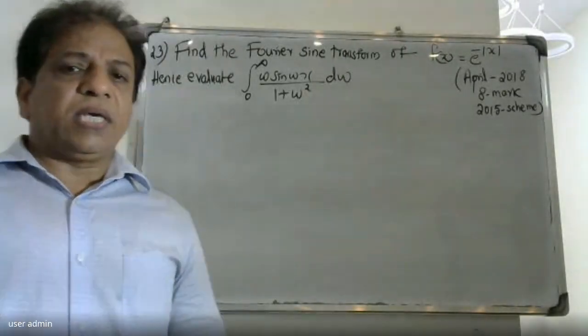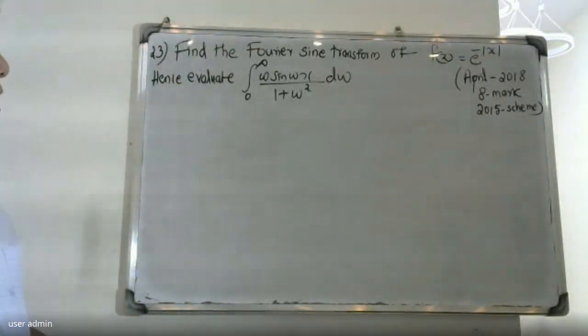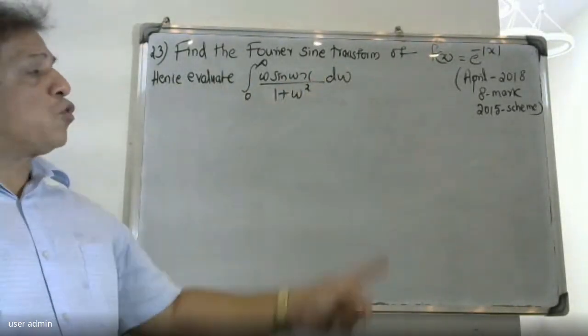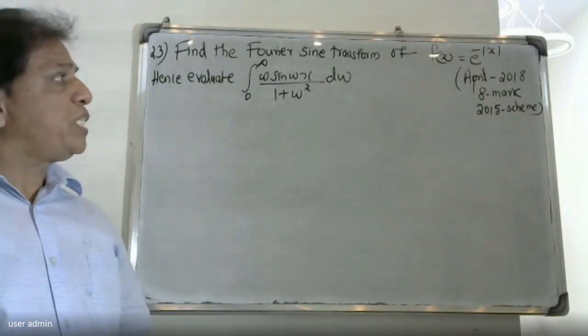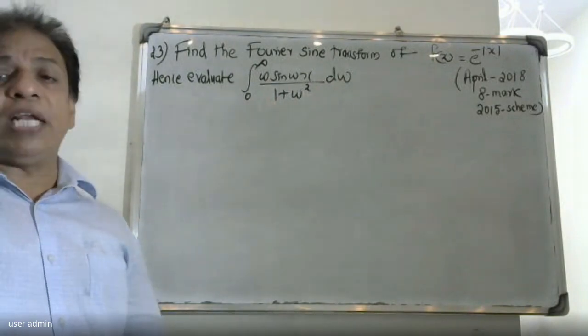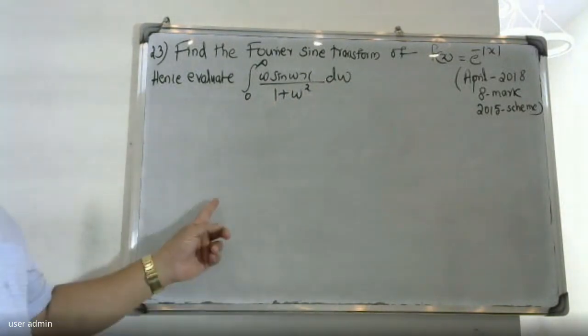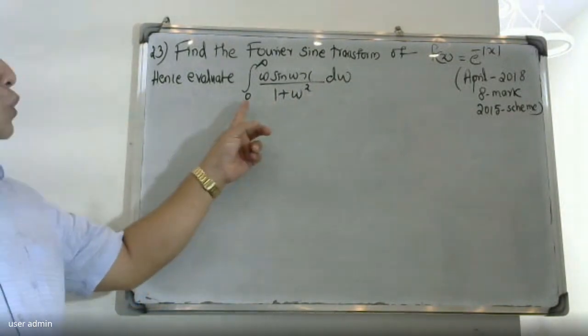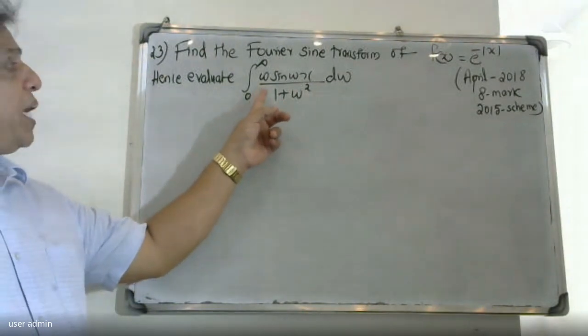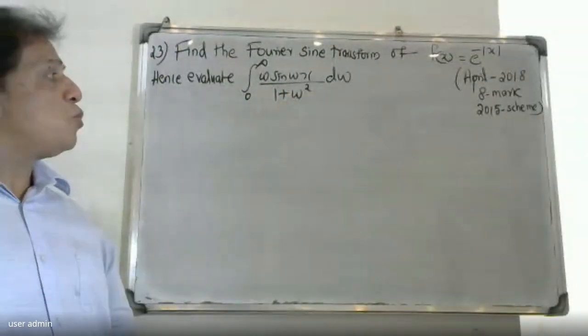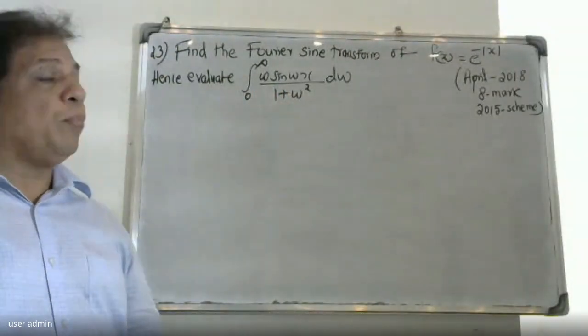Good morning students. Find the Fourier sine transform of f(x) = e raised to minus |x|, hence evaluate the integral from zero to infinity of omega sin(omega x) divided by (1 plus omega squared) d omega.